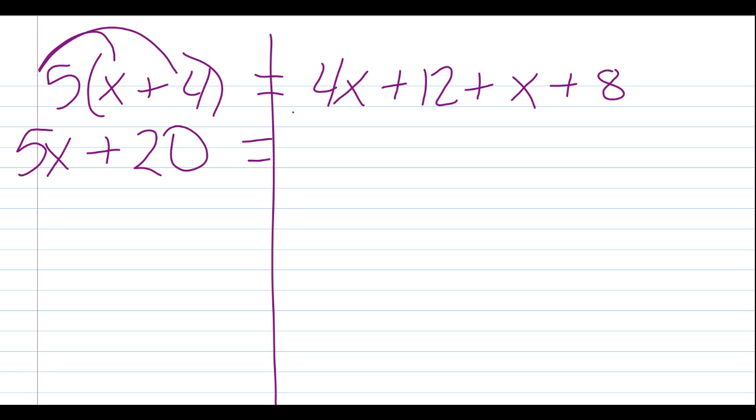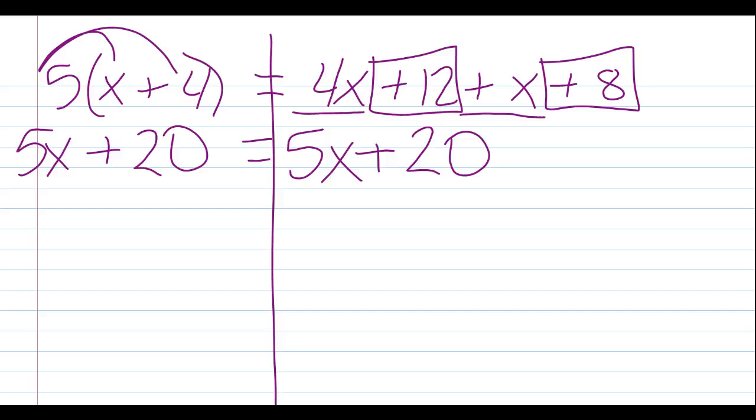On the other side, we want to combine like terms. So, 4x plus x becomes 5x. And then 12 plus 8 becomes 20. Now, if you look at this right now on both sides, when they're simplified, you can see that the two sides are identical. So, what's going to happen here is if I need to eliminate one of these x's, I'm going to eliminate this x here minus 5x. When I come to the right side to subtract the same number, 5x, it eliminates that x as well. So, what I'm left with is 20 equals 20.